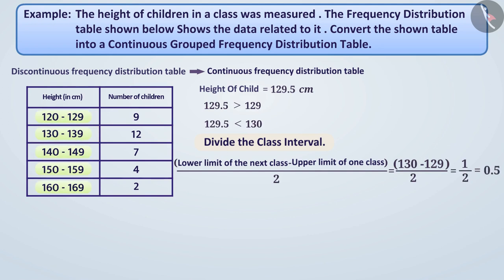Now, we will subtract 0.5 from the lower limit of each class, such as 120 minus 0.5 equals 119.5. Similarly, we will add 0.5 to the upper limit of each class, like 129 plus 0.5 equals 129.5. In this way, we create a new class interval 119.5 to 129.5.